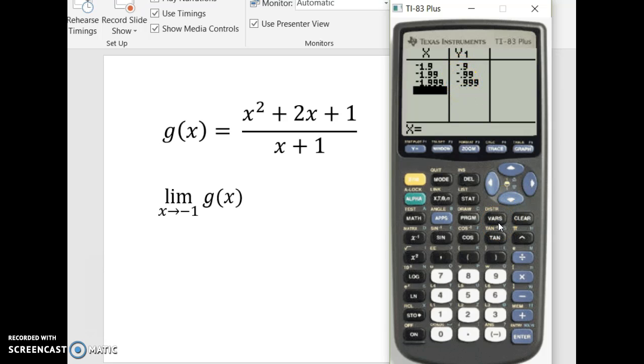Let's try a little bit to the left of it. So, negative 2.1, negative 2.01, negative 2.001. And, yep, looks like we're going to negative 1. So, I say the limit of the function as x approaches negative 1 is negative 1.